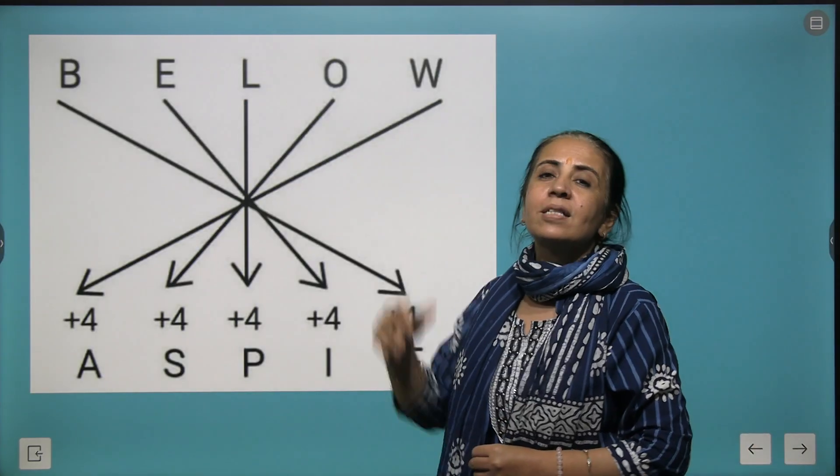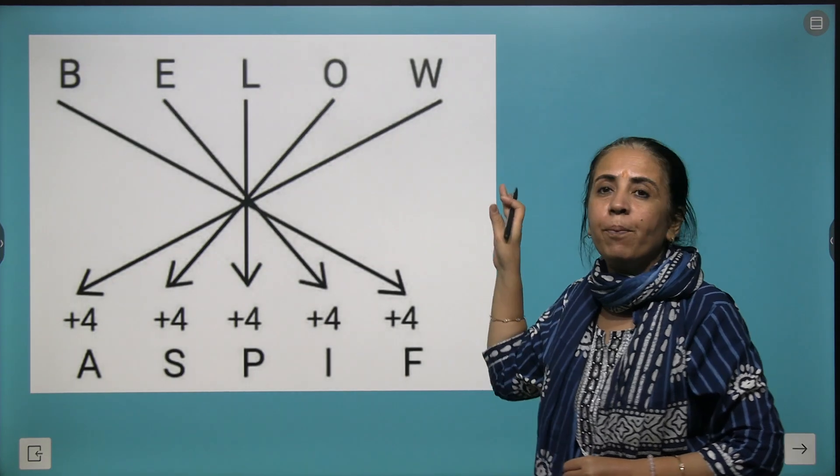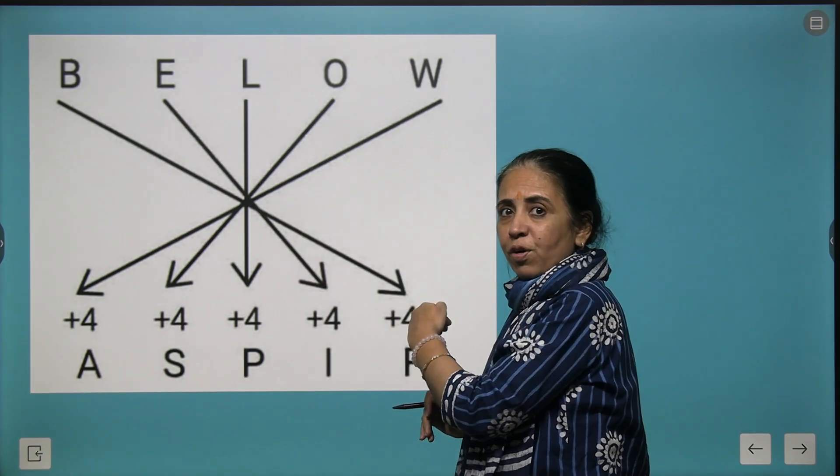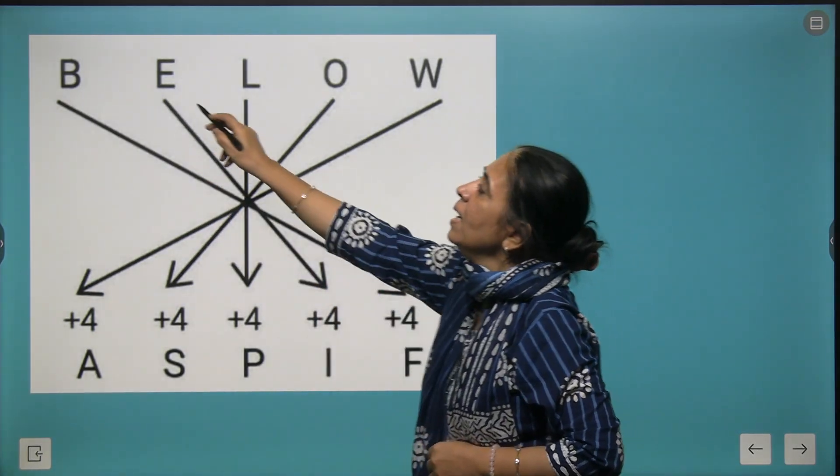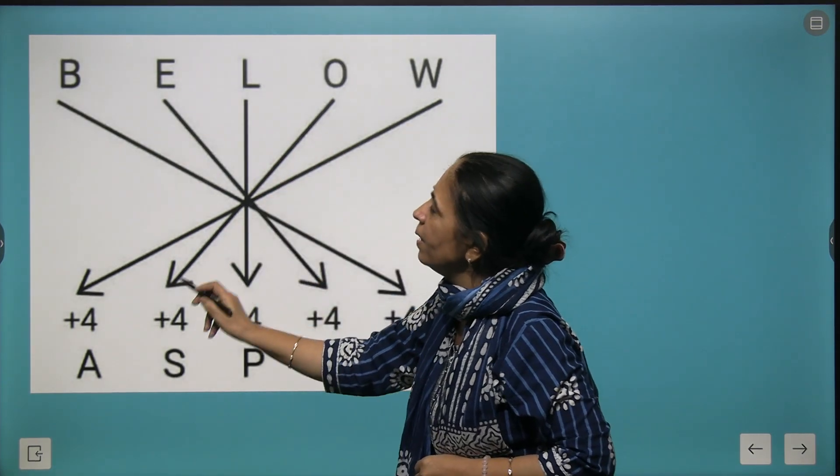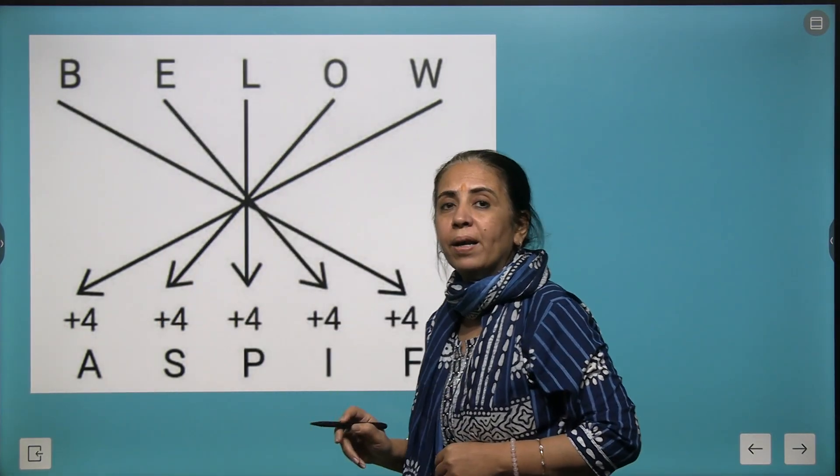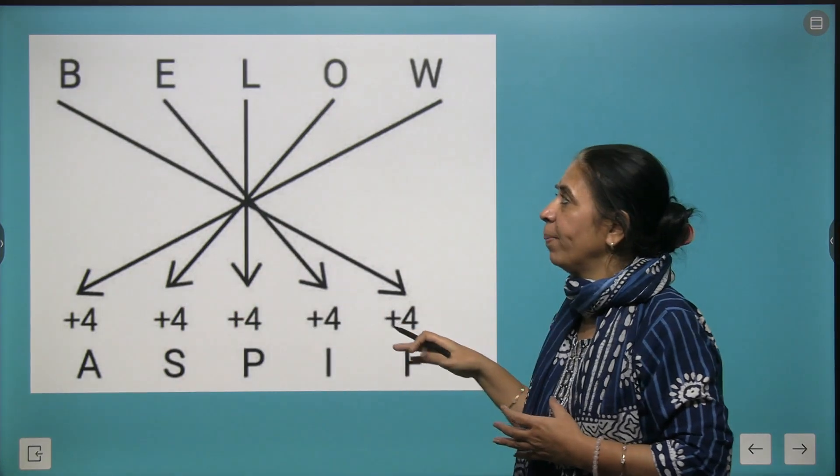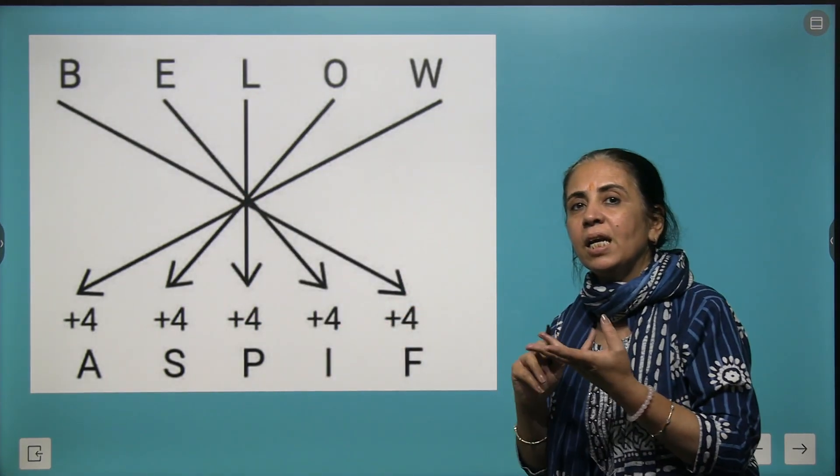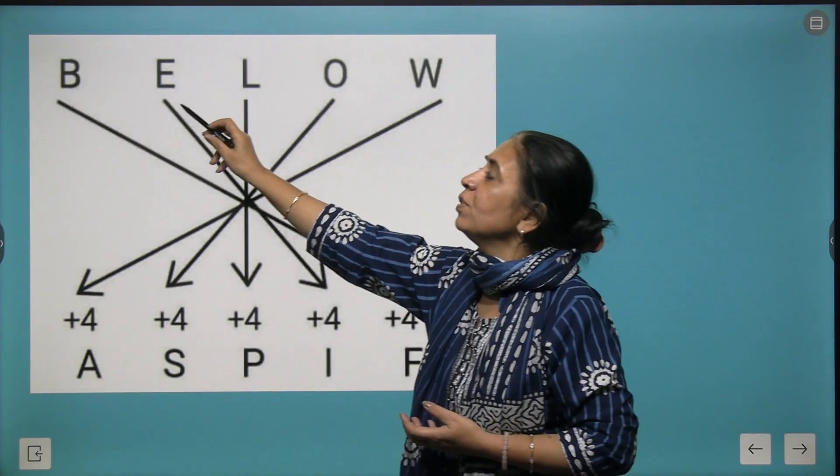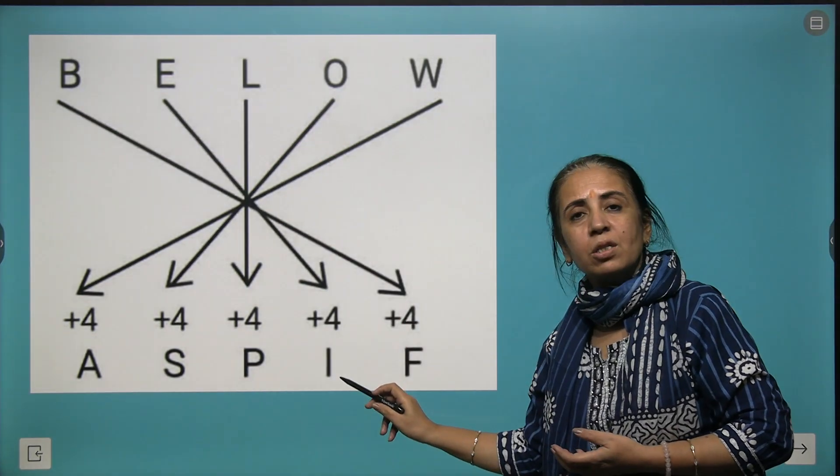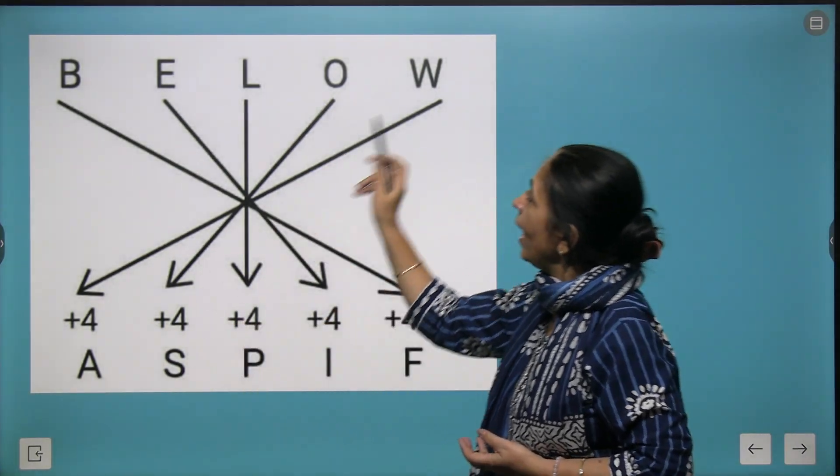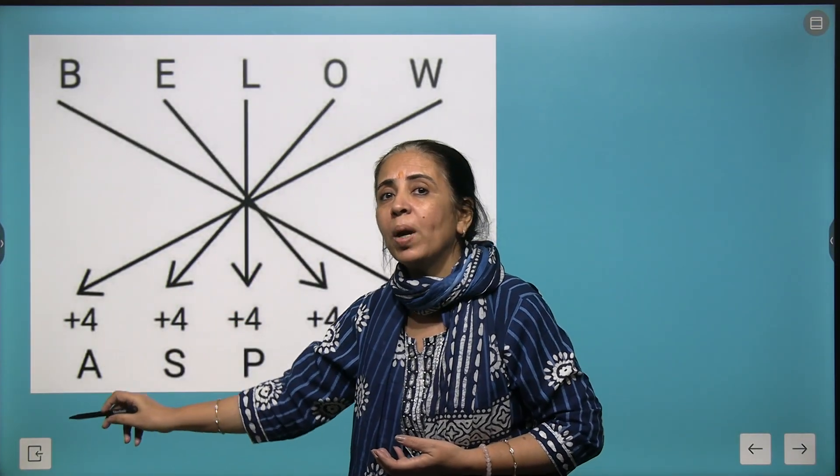Let's take another word: BELOW. What we're doing is first taking it in reverse form - B, E, L, O, W reversed gives W, O, L, E, B. Then we add plus 4 to every alphabet: W+4 is A (after Z), O+4 is S, L+4 is P, E+4 is I, B+4 is F. Your new word becomes ASPIF.